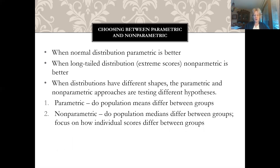When choosing between the two approaches: parametric is better when normal distribution occurs in the sample; non-parametric is better when you have long-tailed distributions with extreme scores that skew the distribution. When distributions have different shapes, parametric answers whether population means differ between groups, while non-parametric asks whether population medians differ between groups, focusing on how individual scores differ.